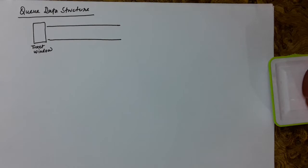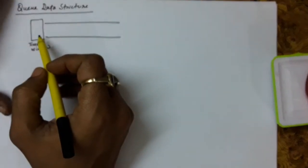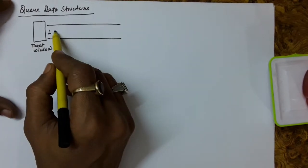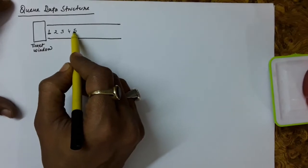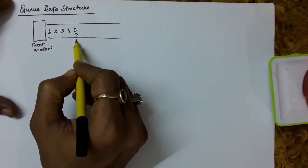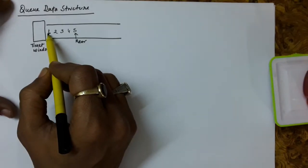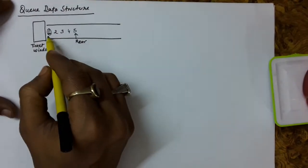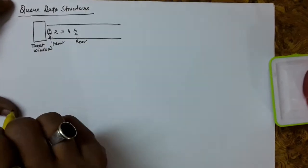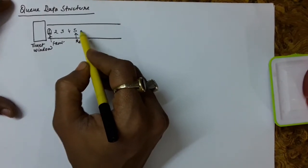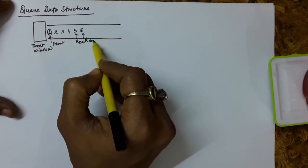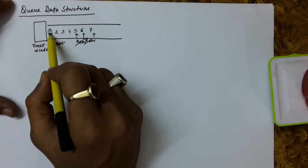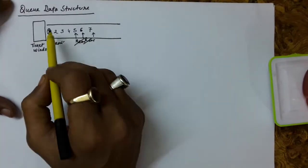In this lecture we will discuss about the queue data structure. Suppose we have a ticket window and in front of it various people are coming — person number one, person number two, person number three, person number four, person number five, and so on. The last person has arrived at the rear end. When the ticket window opens, it will serve the ticket first to person number one, who is at the front end.